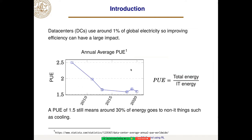Data center electricity goes both to IT energy and other parts. Usually we measure how much actually goes to IT energy — which is the energy we want to use to process interesting things — using the PUE. That's the total energy over IT energy.